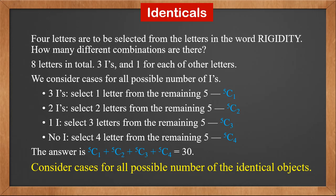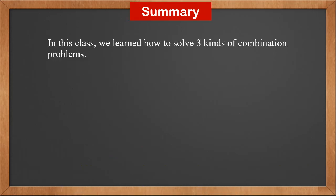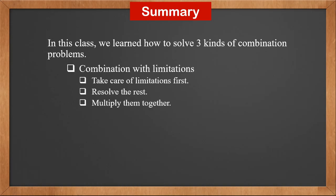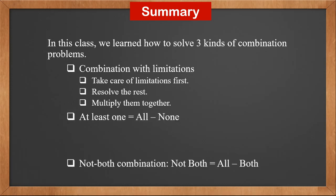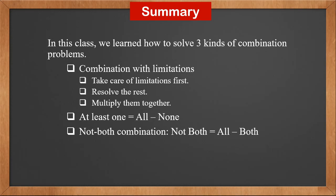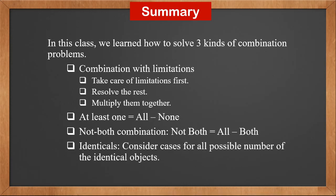To solve combination with identicals problems, we consider cases for all possible numbers of the identical objects. In this class, we learned how to solve 3 kinds of combination problems: combination with limitations (take care of limitations first, resolve the rest, multiply together); at least 1 equals all minus none; not both combination (not both equals all minus both); and identicals (consider cases for all possible numbers of identical objects).